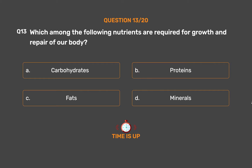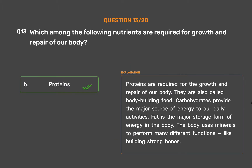The correct answer is Option B - Proteins. Proteins are required for the growth and repair of our body. They are also called body-building food. Carbohydrates provide the major source of energy for our daily activities. Fat is the major storage form of energy in the body. The body uses minerals to perform many different functions, like building strong bones.